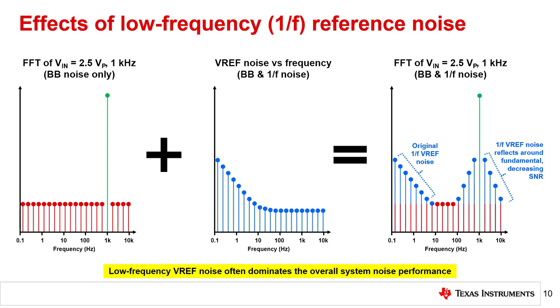Moreover, the very low frequency nature of this noise makes it challenging to filter out. Therefore, the reference's 1 over F noise shows up in the low frequency region as expected, but also tends to reflect around the fundamental, causing the skirting effect shown in the plot on the right. This increased noise around the fundamental frequency can reduce the overall system SNR and often dominates the overall system noise performance compared to the voltage reference's broadband noise. Carefully consider the 1 over F noise magnitude of your voltage reference when choosing a component.